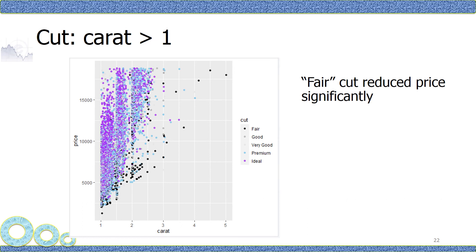The last one is cut. As you can see, in this dataset, there are not too many diamonds in the fair cut. That is represented by the black ones. And the fair cut reduces price significantly.